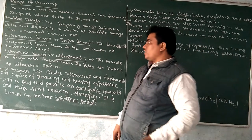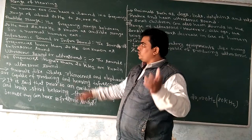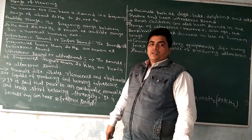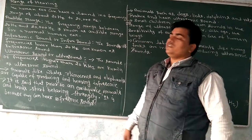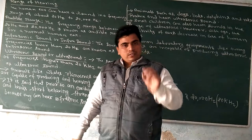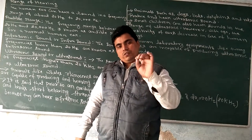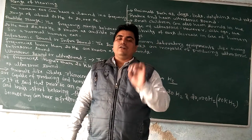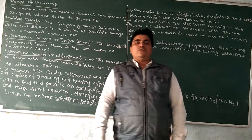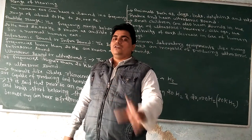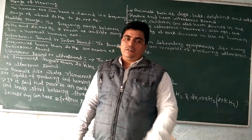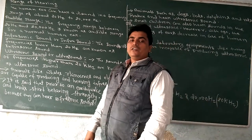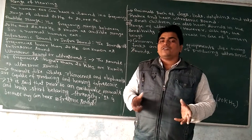To summarize: the range of hearing refers to sounds of frequencies between 20 hertz and 20,000 hertz, known as the audible range. Infrasonic sounds are less than 20 hertz, and ultrasonic sounds are more than 20,000 hertz.